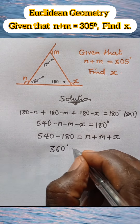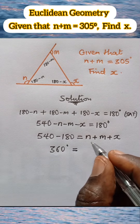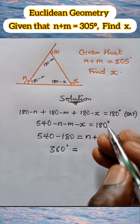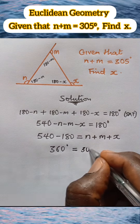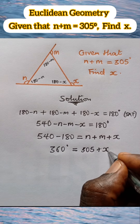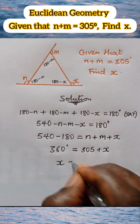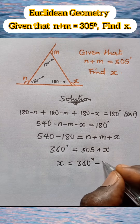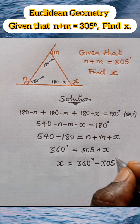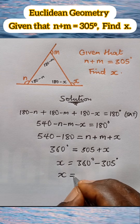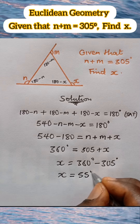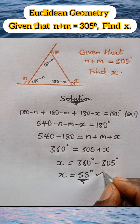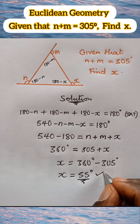We have that n plus m is given as 305 degrees, so we put 360 equals 305 plus x. Collecting like terms: x equals 360 degrees minus 305 degrees, so x is equal to 55 degrees. This is the value of angle x. Thank you very much for watching.